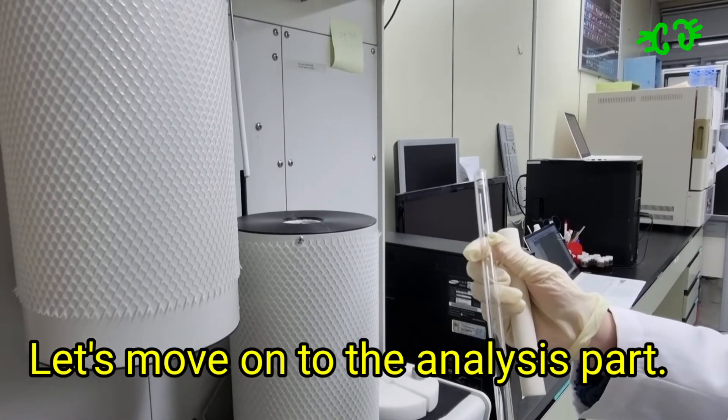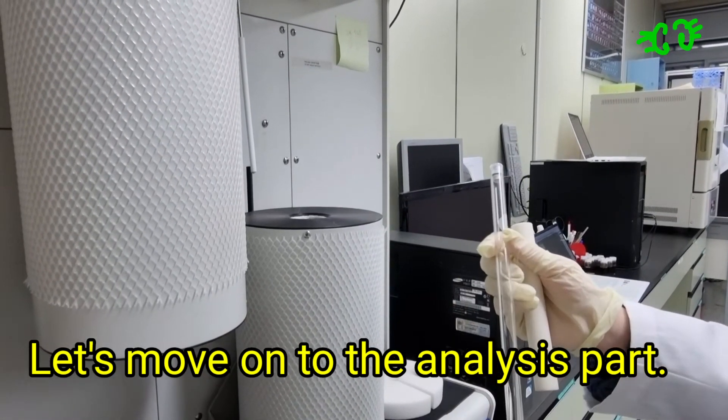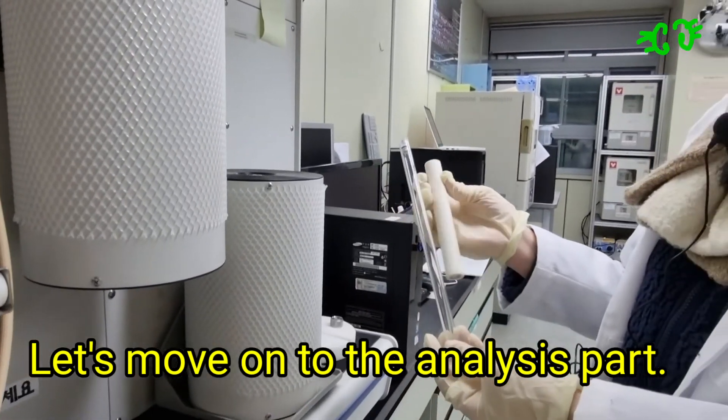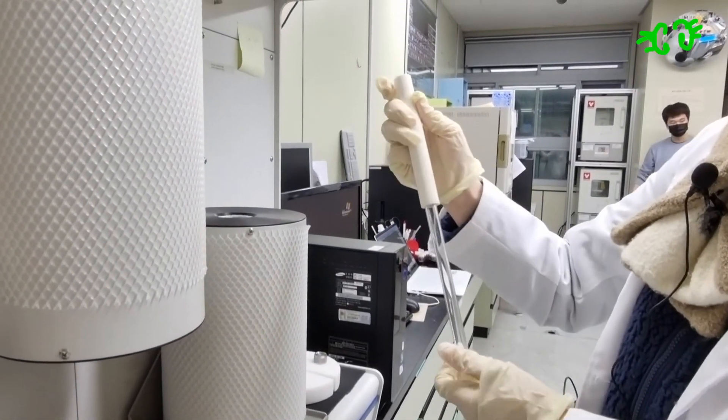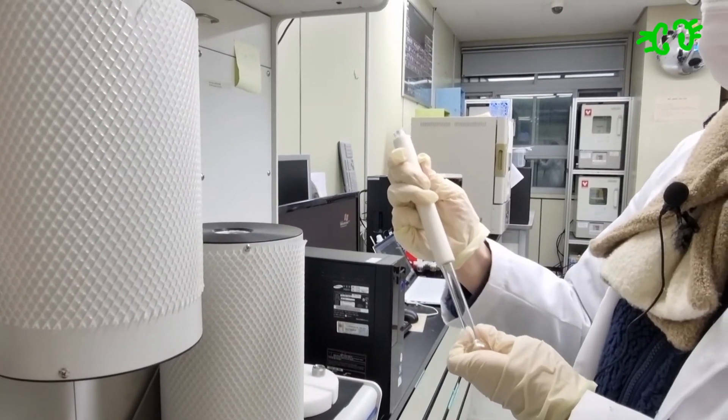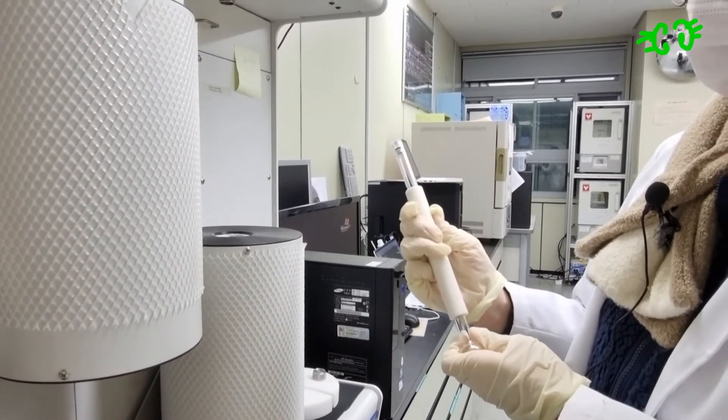To make the temperature same for all places in the sample tube, we use an isothermal jacket. We should put the jacket in the sample tube like this.